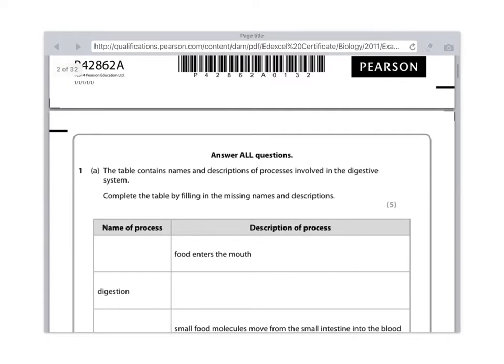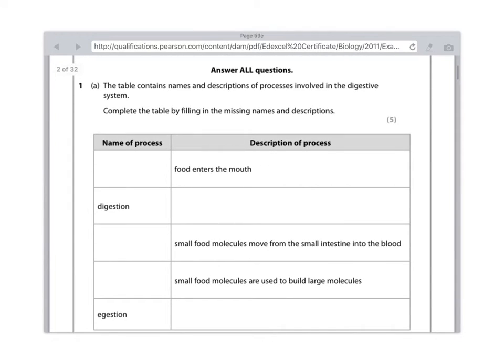In the first row, the description of the process is food enters the mouth. So don't write eating. Here you need to write the word ingestion. Digestion is the name of the process, so we need to provide a description. That's going to be the definition of digestion, which is the breakdown of large insoluble molecules into small soluble ones. You need to get all those words in there to get the mark.